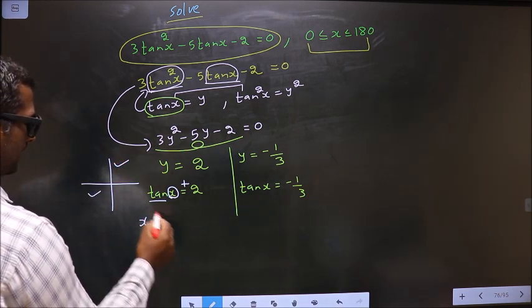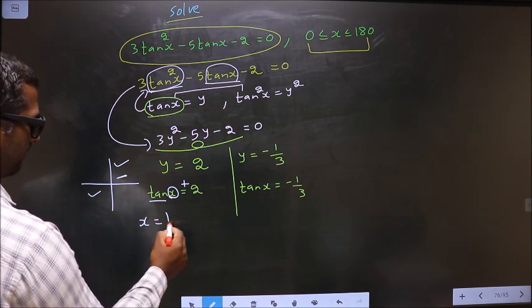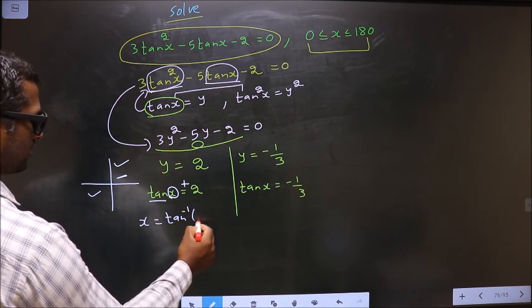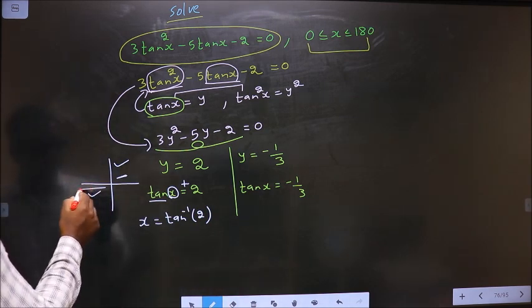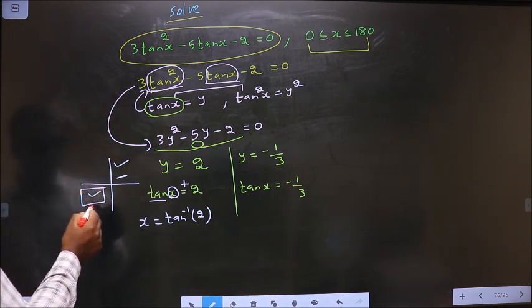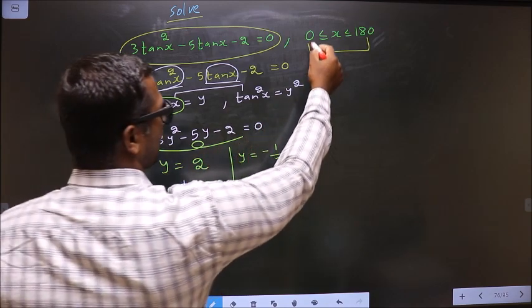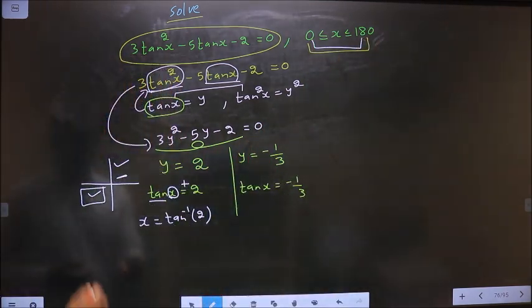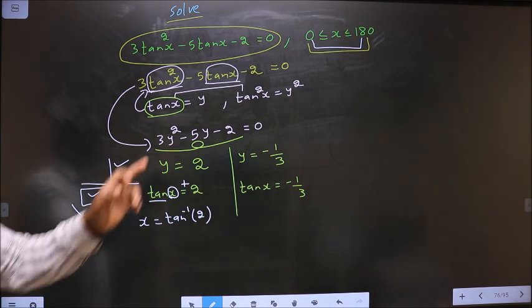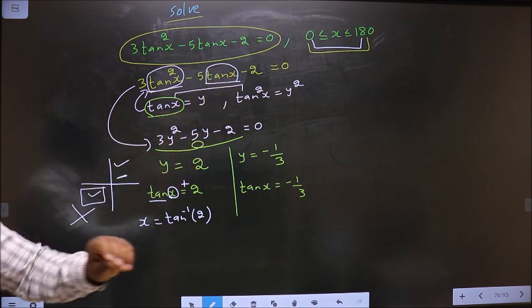To get an angle in the first quadrant, we should do directly tan inverse 2. Now see here, angles which we find in the third quadrant do not lie in this interval. That means we do not need to find the angle in the third quadrant because it does not lie in the given interval.